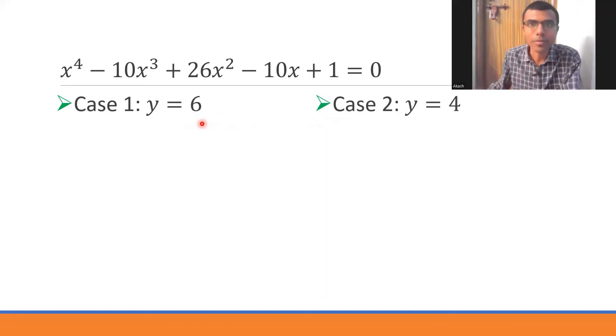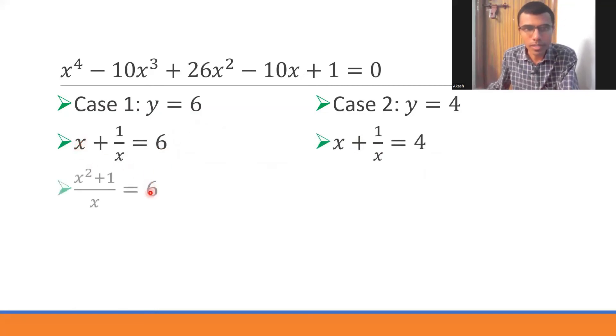What is our y I told you? x + 1/x. So this would be nothing but x + 1/x = 6, x + 1/x = 4. Now let's take LCM. This would be nothing but (x² + 1)/x = 6, (x² + 1)/x = 4.